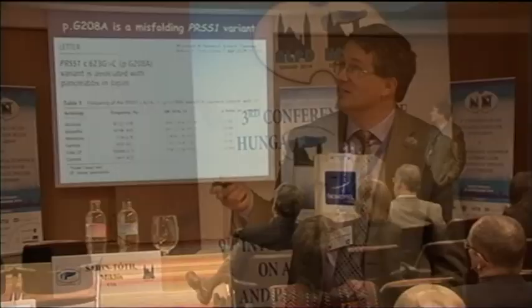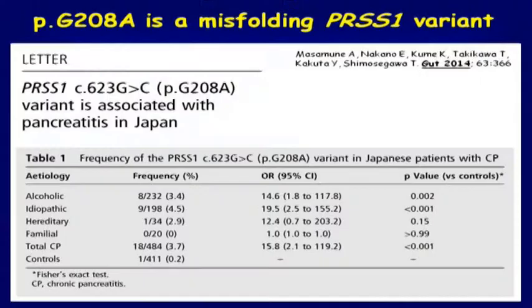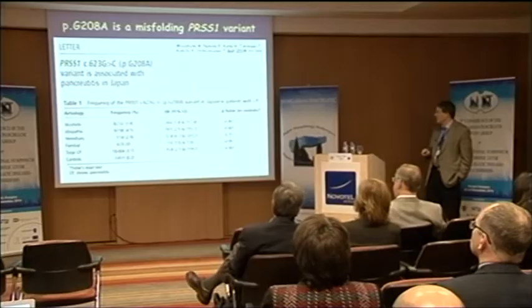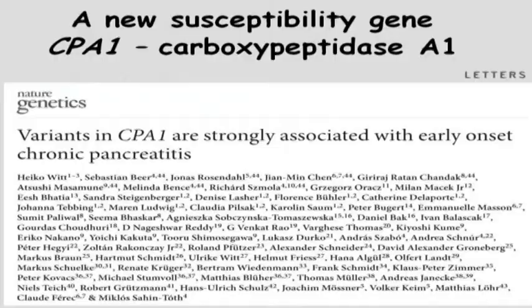More recently, there's the G208A mutation particularly found in Asia — Japan and Korea — which is fairly common and is also a misfolding variant. We're finding more and more misfolding variants even within trypsinogen; none of these trypsinogen variants increase activation — they seem to have their bad effects through misfolding. The real breakthrough came with the CPA1 mutations: it appears all the pathogenic CPA1 variations act through misfolding.